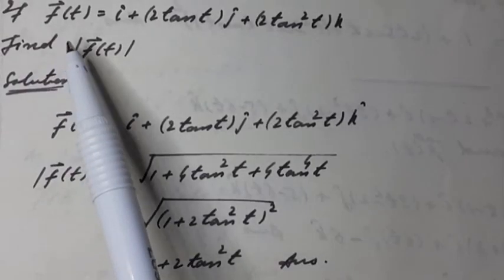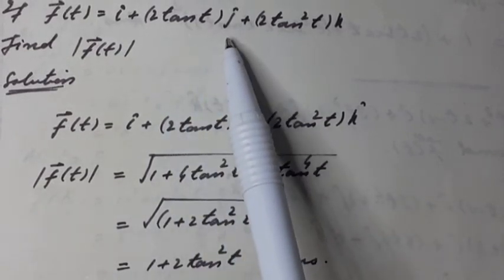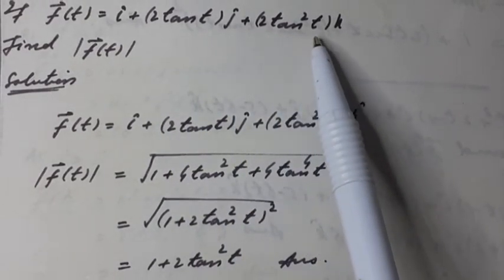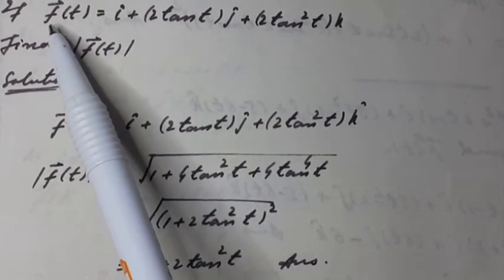If vector function f(t) is equal to i unit vector plus 2 tangent t j unit vector plus 2 tangent square t k unit vector, find the magnitude of the vector function f(t).